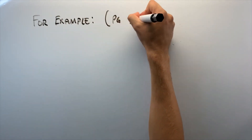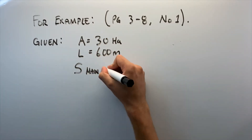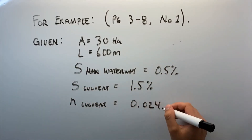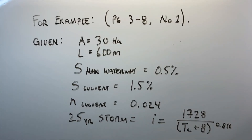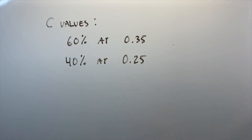Let's look at an example from page 3-8. We're given: area A = 30 hectares, L = 600 meters, slope of the main waterway = 0.5%, slope of the culvert = 1.5%, Manning's n for the culvert = 0.024, and the intensity equation for a 25-year storm: I = 1728 / (Tc + 8)^0.866.